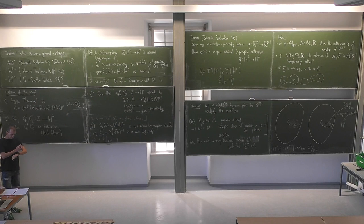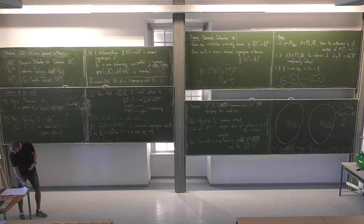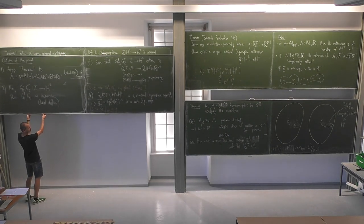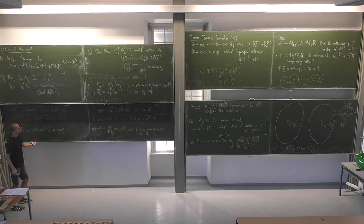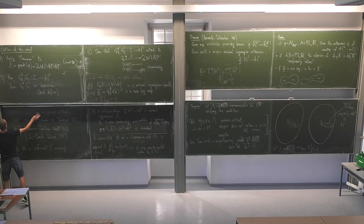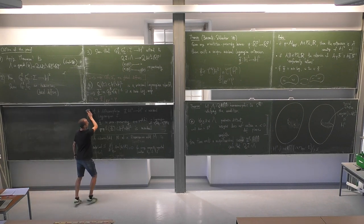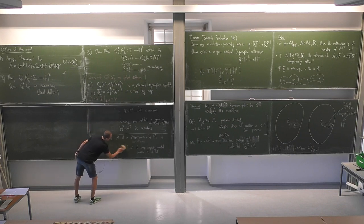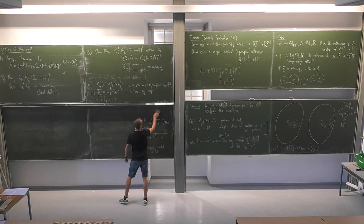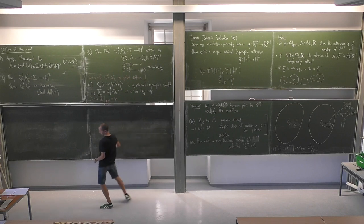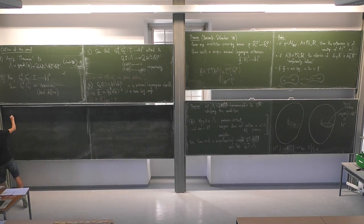That is the outline. Now let me give some ingredients of these steps. Let me start with step one, which is an easy exercise. We want to show that for a triple of points x = (x1, x2), y = (y1, y2), z = (z1, z2) in lambda — the graph of phi in RP1 times RP1 — condition star holds.